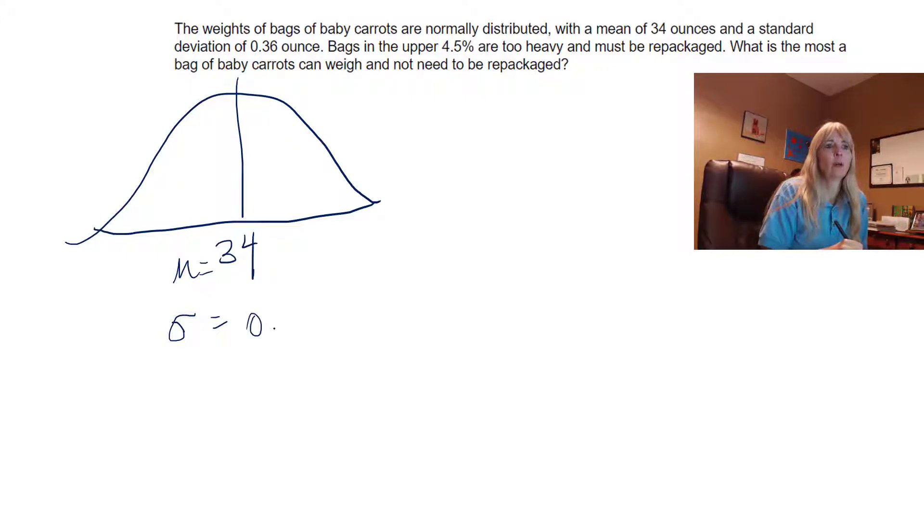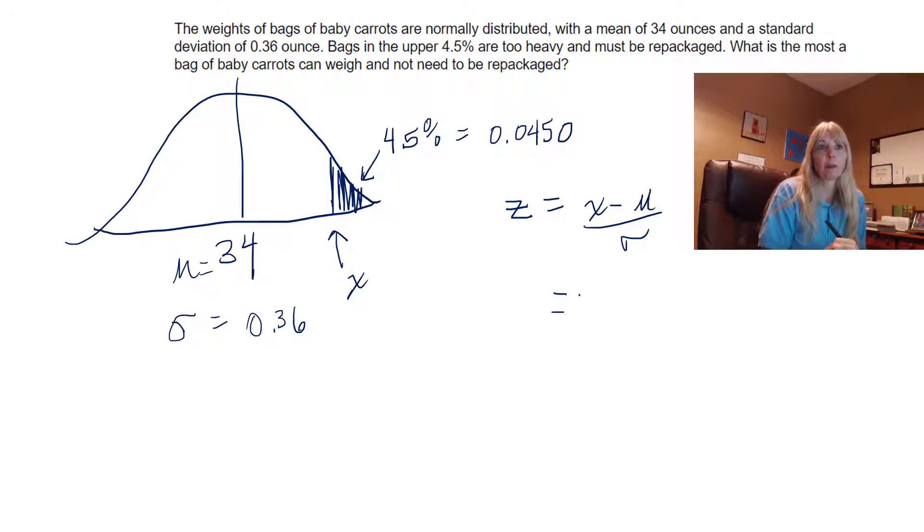Bags in the upper 4.5%, so in other words in decimal because our table is in decimal, 0.045, and what is the most a bag of baby carrots can weigh? So basically I'm looking for X. I'm using my Z formula: X minus μ over the standard deviation. I need to find Z based on the probability, I'm looking for X, that's what I'm solving for, and then they give me this other information.